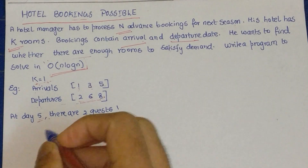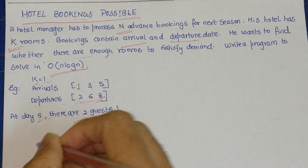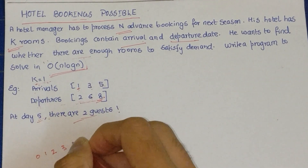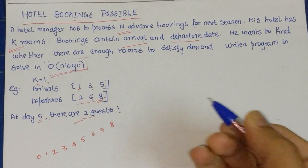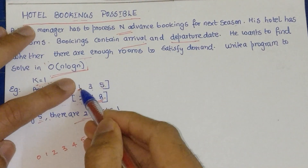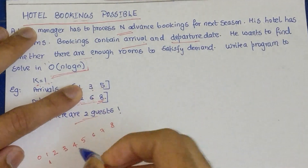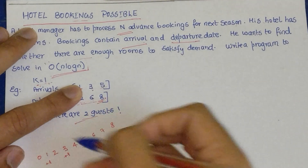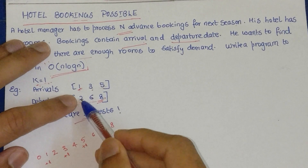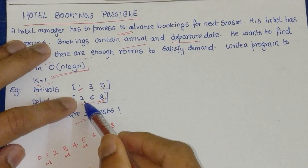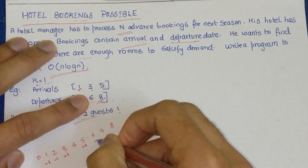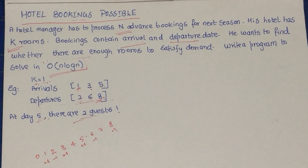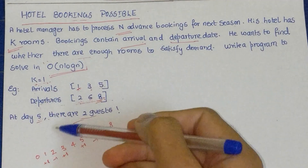Since these are all days or timestamps, I can create an array ranging from the minimum to the maximum value — say from 0 to 8. First, I'll go through the arrivals array and update index 1 as +1, index 3 as +1, index 5 as +1. The array is initialized to 0. Then for the departures, I'll mark index 2 as -1, index 6 as -1, and index 8 as -1. This records when guests arrive and leave.